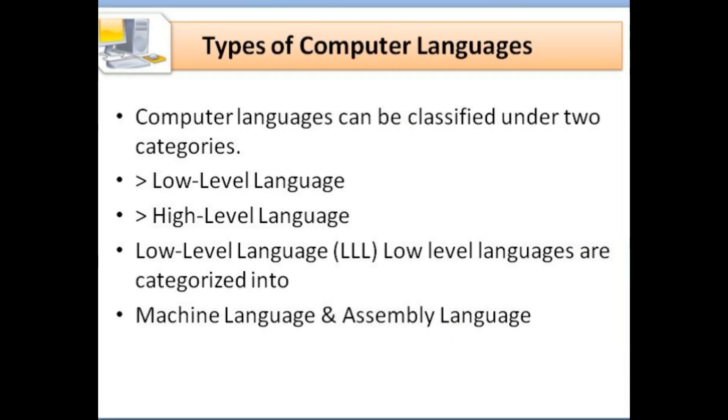Computer language can be classified under two categories: low level language and high level language. Low level language is also categorized into two, machine language and assembly language.